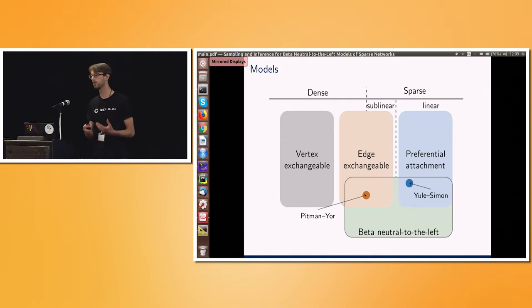That's why beta-neutral-to-the-left models are so interesting. Because within this one model class, we can let the data decide. Do we want dense, sublinear, or linear, rather than siloing into a single class of models? And previously, so this is a non-exchangeable class of models. So previously, that was a big issue. And what this paper is really showing is that we can do inference here, despite the non-exchangeability. We'll be able to exploit some substructures and get something tractable.